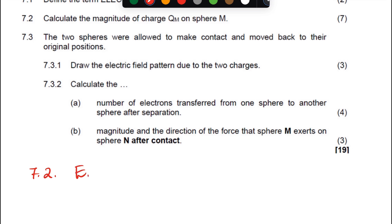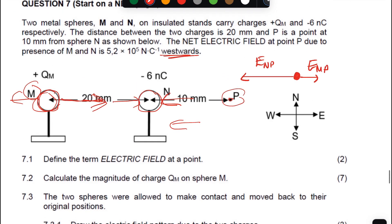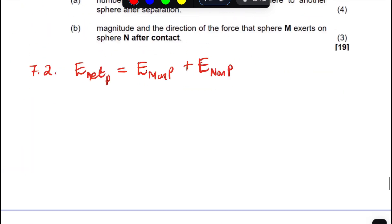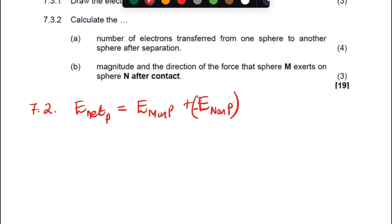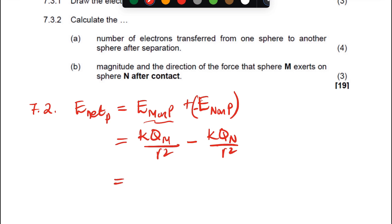The net electric field at P equals the electric field of M on P plus the electric field of N on P. The electric field of N on P goes to the left, so it's negative. The equation becomes: E_net = K·Q_M / R² − K·Q_N / R².